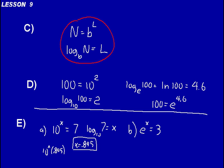Look at problem B: e to the x equals 3. Write that as a logarithm. Log base e of the argument 3 equals the exponent, which is x. Log base e is the natural logarithm on your calculator — the LN button. So just hit LN, type in 3, and you should get 1.097. So x equals 1.097.